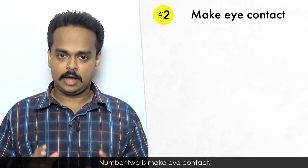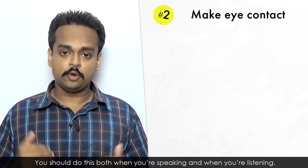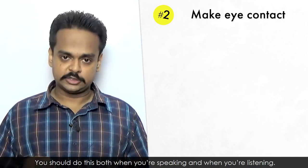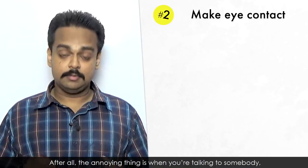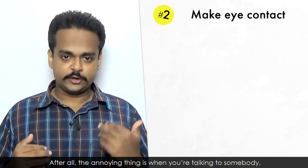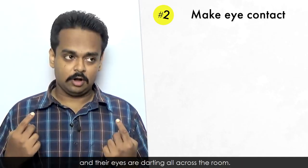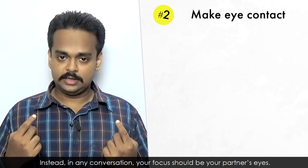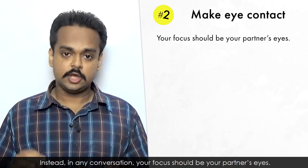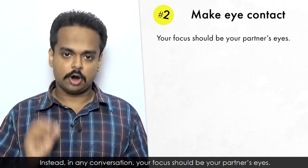Number two is make eye contact. You should do this both when you're speaking and when you're listening. After all, the most annoying thing is when you're talking to somebody and their eyes are darting all across the room. Instead, in any conversation, your focus should be your partner's eyes.